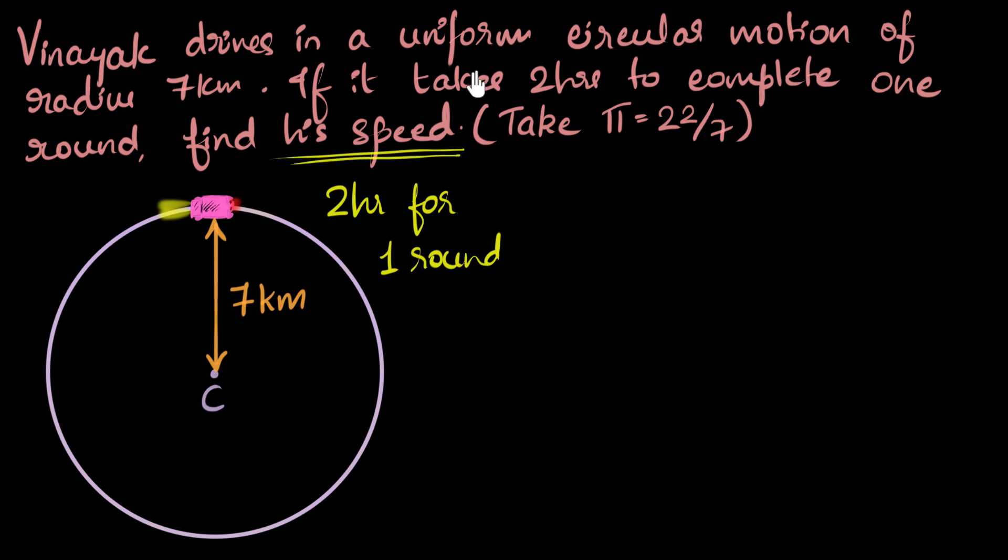What we need to calculate is his speed. Now the important thing to notice is that Vinayak is driving in a uniform circular motion. What does that mean? What is the meaning of uniform circular motion? It just means that the speed of this car is a constant. As it goes over the entire circular path, its speed does not change.